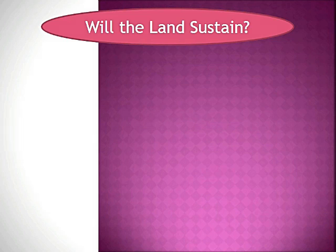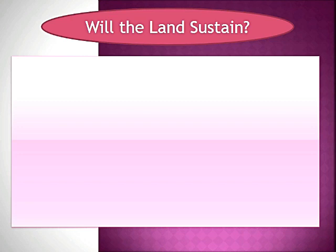Good morning children. Let's quickly begin our today's class. We had already discussed that there are four factors of production: land, labor, physical capital and human capital. Today we will go more deeply into each topic. Our first slide is questioning us about the first factor of production, that is land. The question is: will the land sustain?